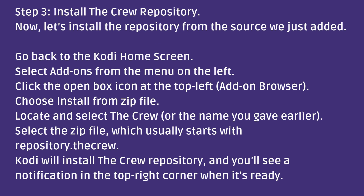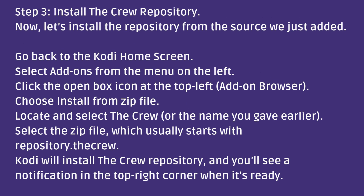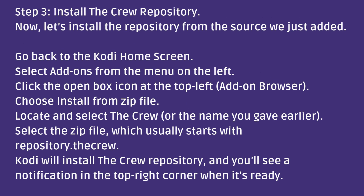Step 3: Install the Crew repository. Now, let's install the repository from the source we just added. Go back to the Kodi home screen. Select Add-ons from the menu on the left. Click the open box icon at the top left — the add-on browser. Choose Install from Zip File. Locate and select The Crew, or the name you gave earlier. Select the zip file, which usually starts with "repository.thecrew". Kodi will install The Crew repository and you'll see a notification in the top right corner when it's ready.